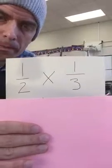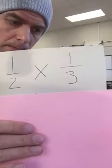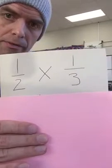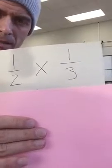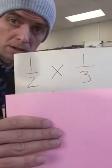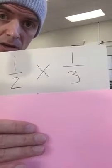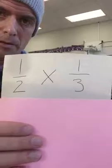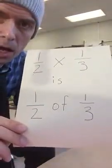1 half times 1 third. And if we use what we know about multiplication, it's actually called the commutative property. It means you can flip things around, right? So it could be 1 third times 1 half, 1 half times 1 third, doesn't matter. But if we think back to last unit, we also know that 1 half times 1 third is the same as 1 half of 1 third.